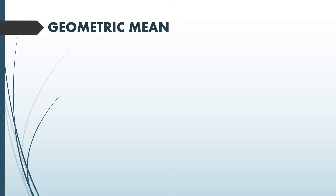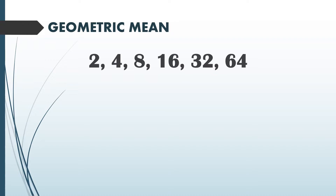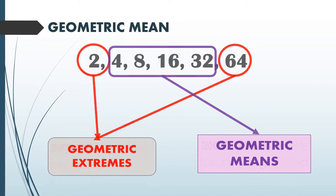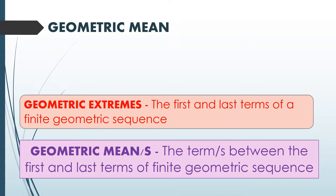The concept of geometric mean is almost the same as the concept of arithmetic mean, except this time we're going to have a finite geometric sequence. For example, let's have 2, 4, 8, 16, 32, and 64. On this finite geometric sequence, 2 and 64 are called geometric extremes, while 4, 8, 16, and 32 are the geometric means. So geometric extremes are the first and the last terms of a finite geometric sequence, while the geometric means are the term or terms between the first and the last terms.